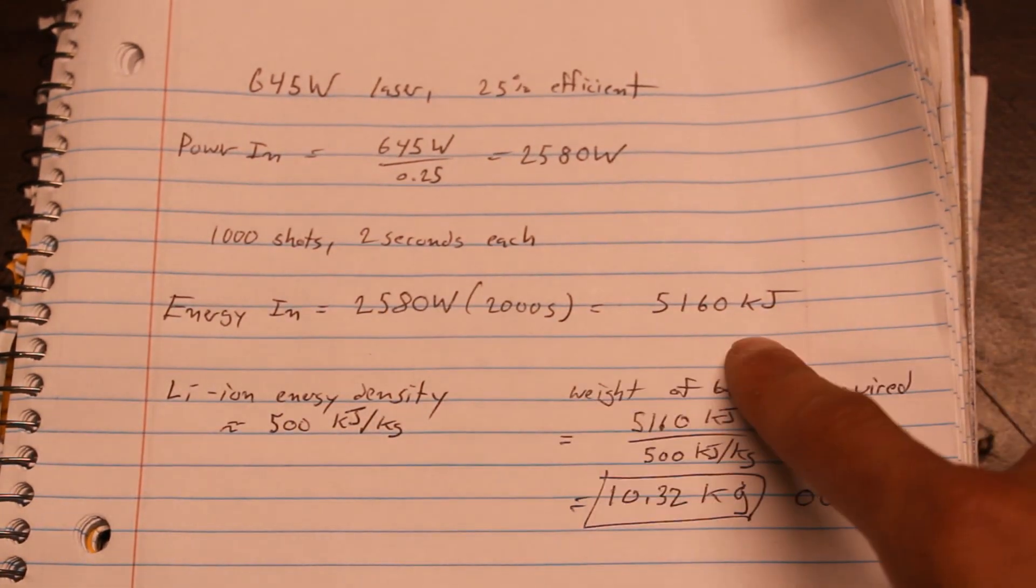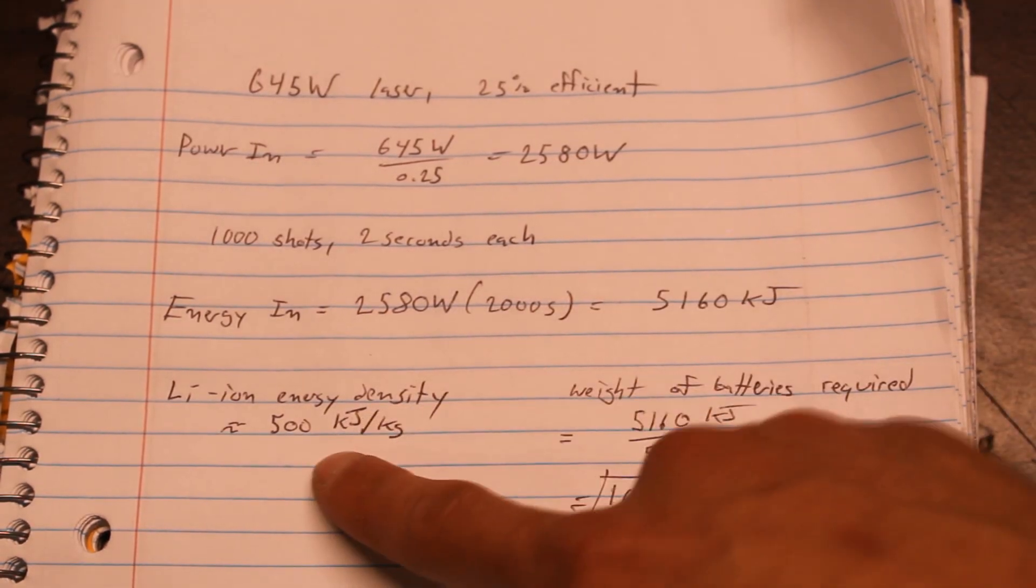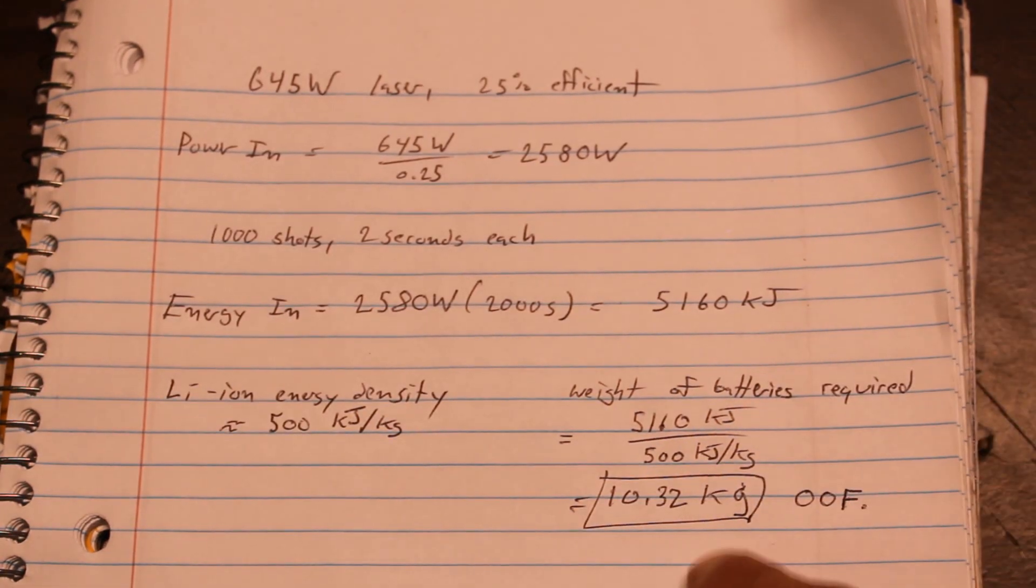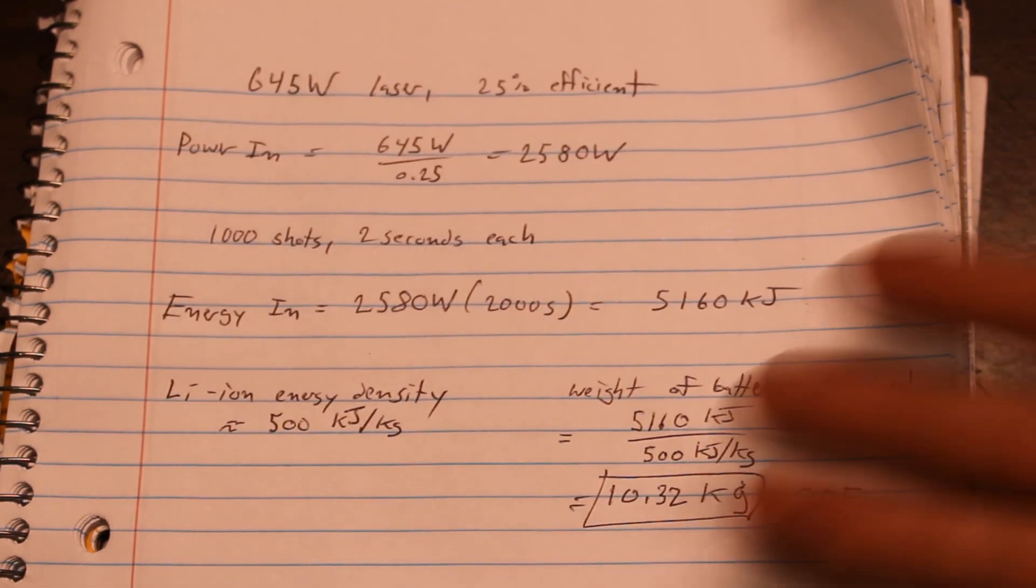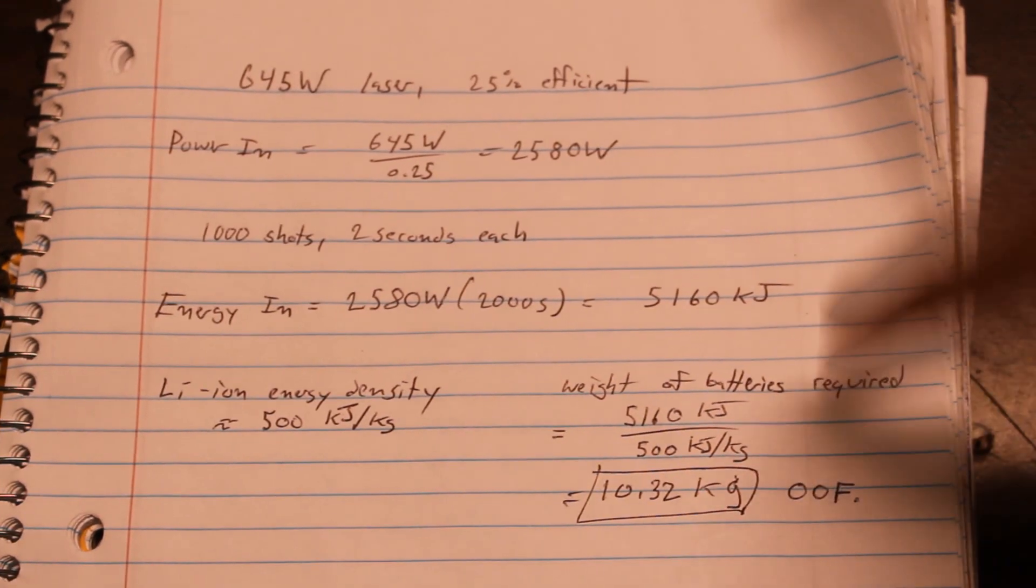And then with 1,000 shots at 2 seconds each, that requires a total input energy of over 5,000 kilojoules. Now, assuming a lithium-ion energy density of 500 kilojoules per kilogram, that gives you a required battery weight of over 10 kilograms. So that's quite a bit over the 3 kilograms of the gun. So this is obviously a giant, giant issue.